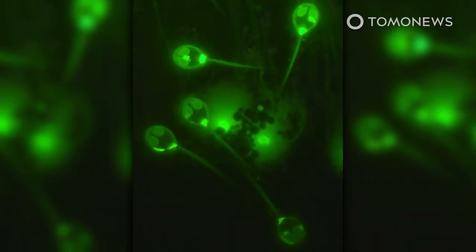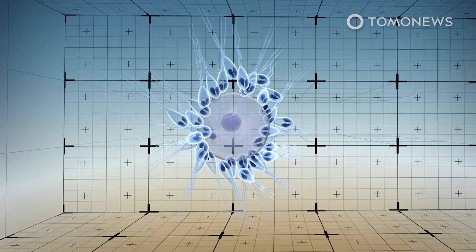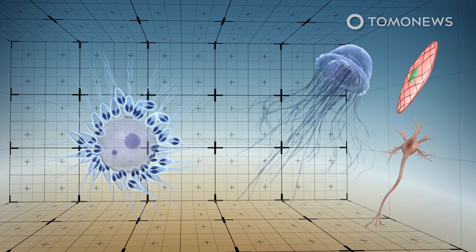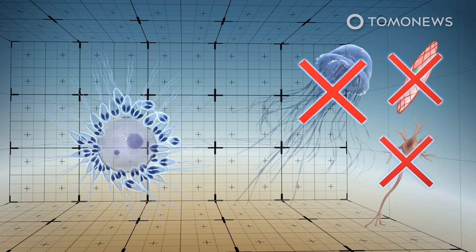The nuclei of the parasite's spores glow green under a fluorescent microscope. H. salminicola is a distant relative of the jellyfish, and the microscopic parasites have evolved to lose nerves, muscles and tissue.